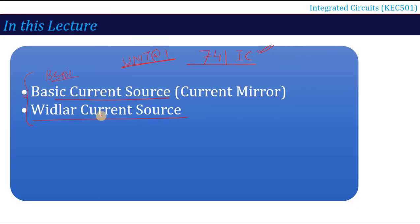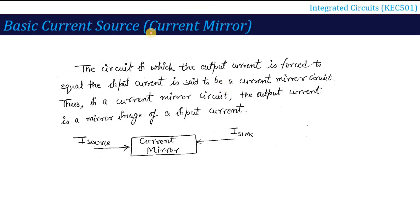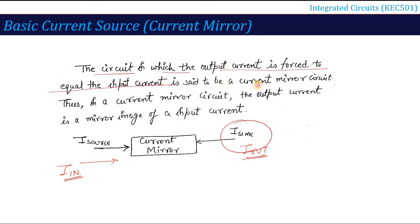Let's start. The first one is the basic current source, called the current mirror. As the name defines — current mirror — it means a circuit in which the output current is always equal to the input current. A circuit in which the output current is forced to equal the input current is called a current mirror circuit. The output current is a mirror image of the input current, producing a constant current — that's why it is also known as a constant current source or basic current source.